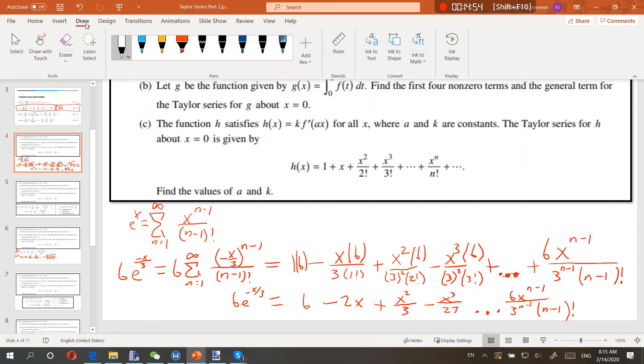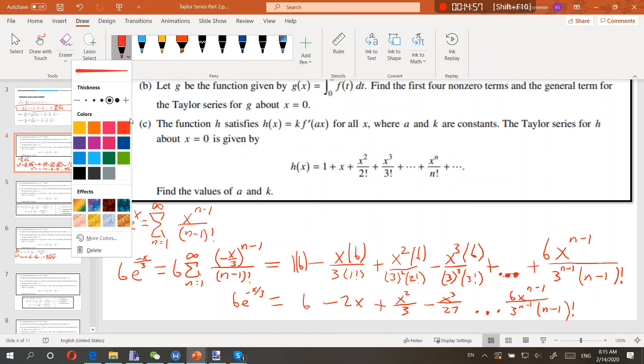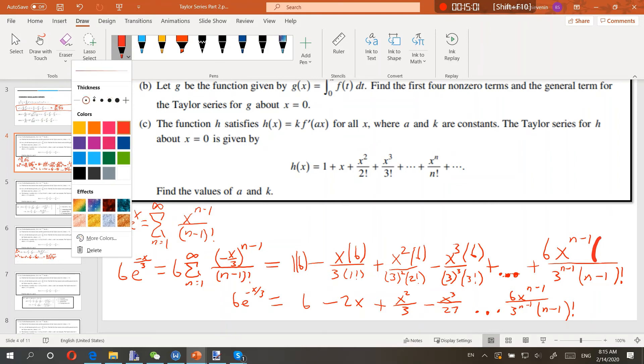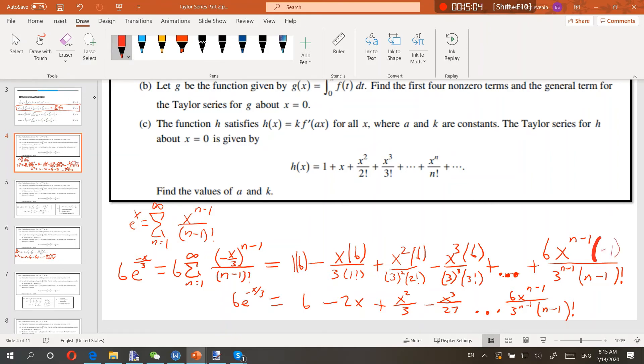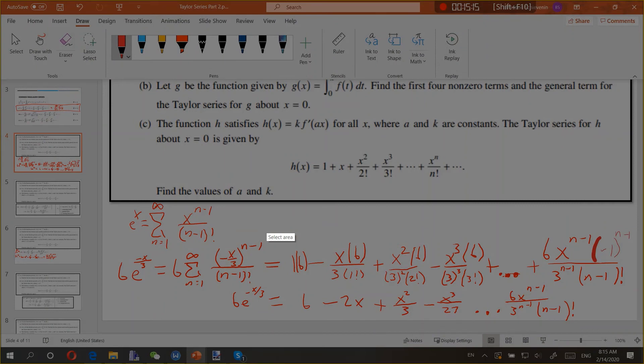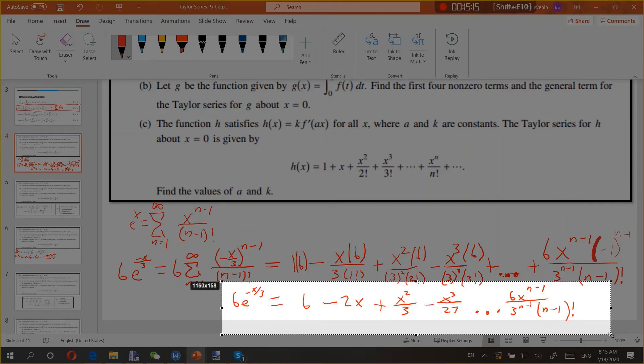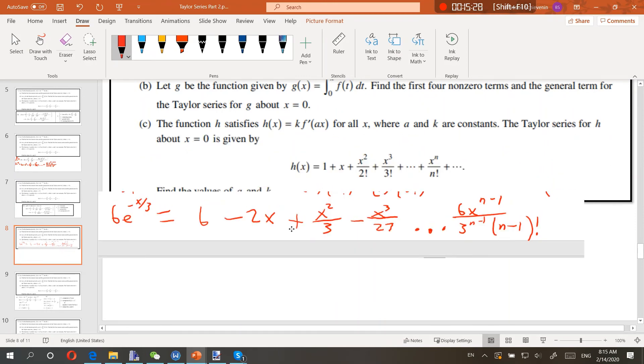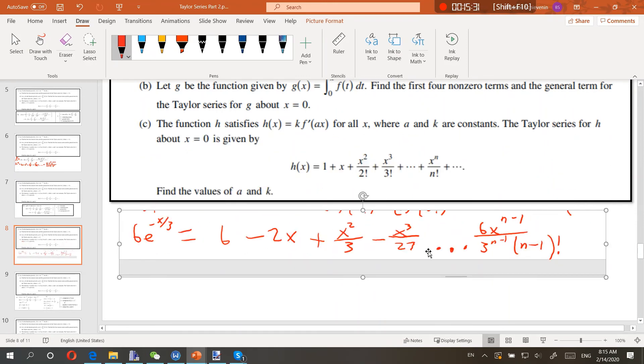If we did want to change this back to starting at N equals 1 instead, then all of these would be plus 1 from where they are right now. This is equal to the integral of 6e to the minus x over 3.